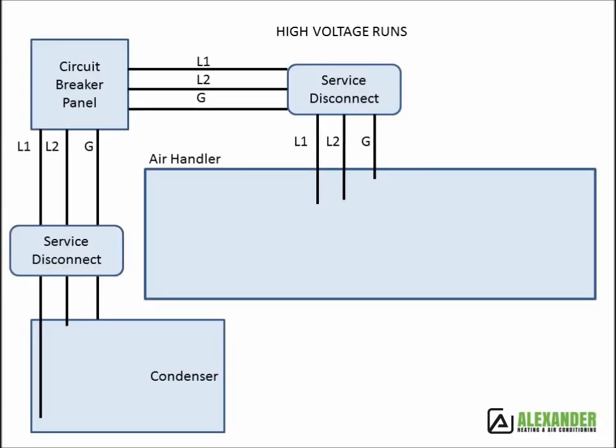High voltage runs are the lines that run from your circuit breaker through service disconnects to your air handler and condenser.